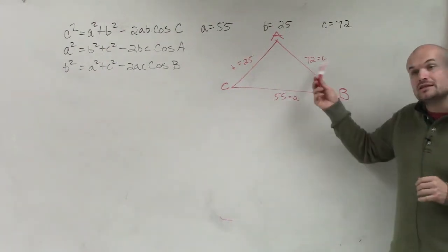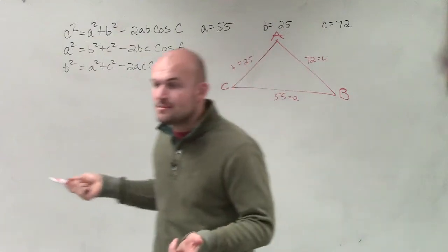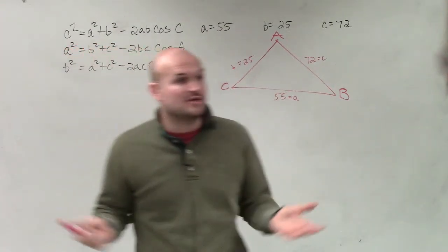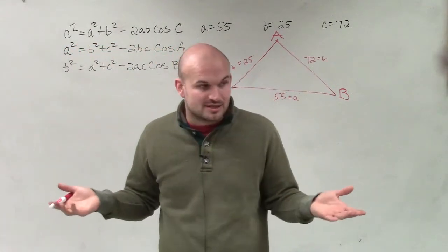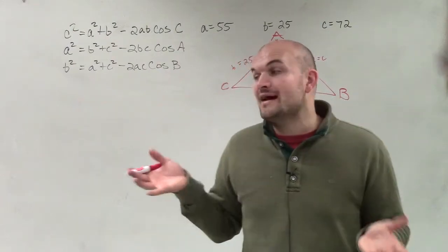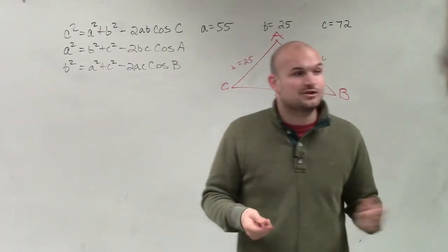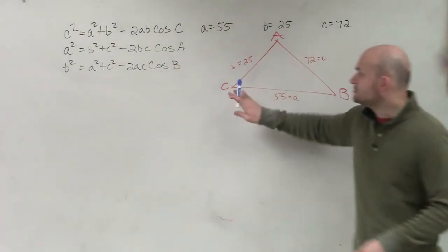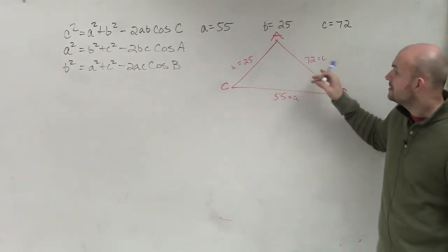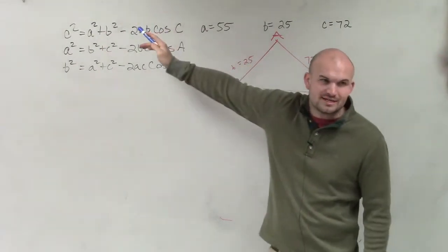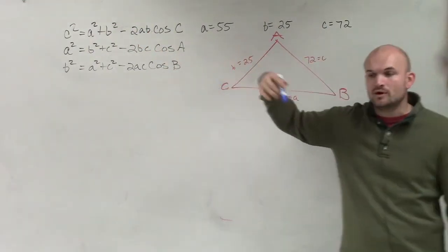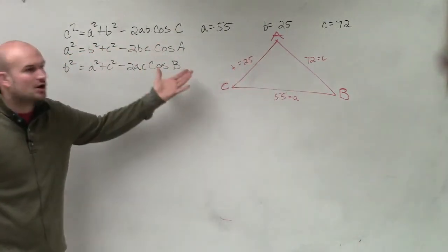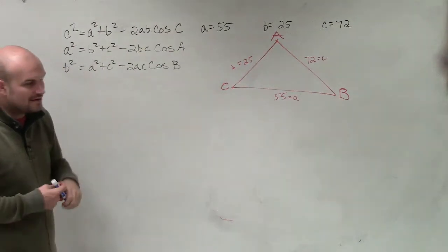C. So when you're doing the law of cosines and you do not have an angle to choose from, what I would recommend you do is try to find the obtuse angle. Because if you can find the obtuse angle, then you know there's not a two-case solution. But if you choose an acute angle, then you have to be careful. So what we're going to do is let's do law of cosines for C.